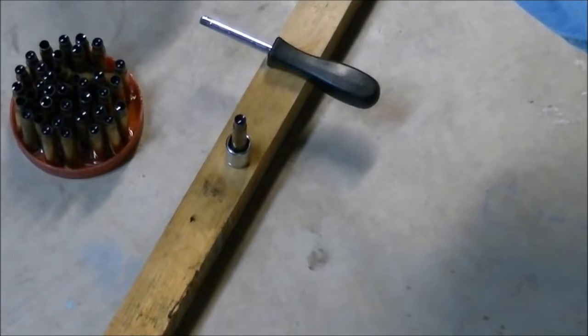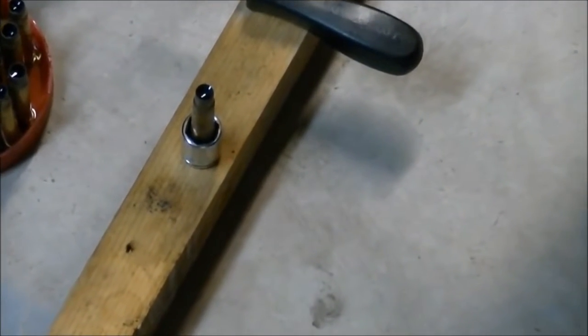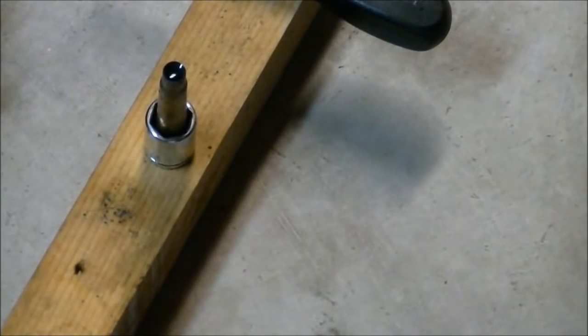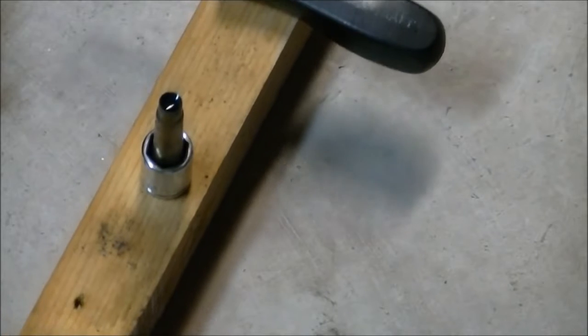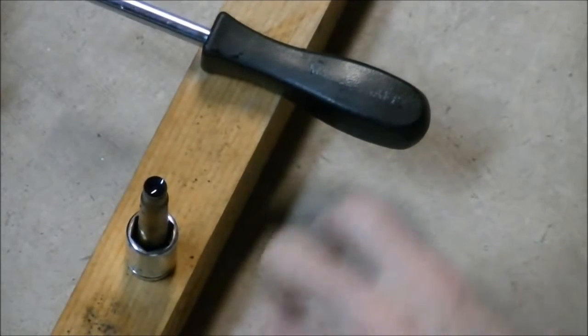Basically all we're going to do is provide a sharp blow to the primer and we're going to transfer that blow using hydraulics. In this case we're just using a simple punch to provide that hydraulic impulse and that'll force out the primer.